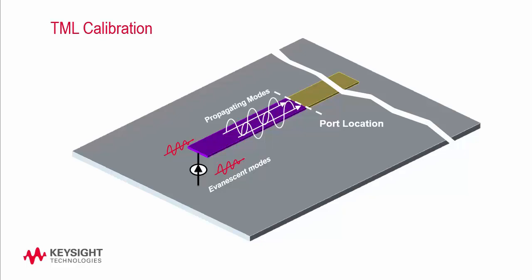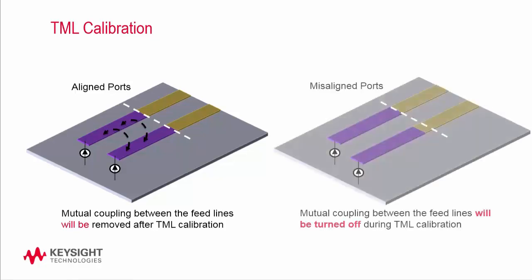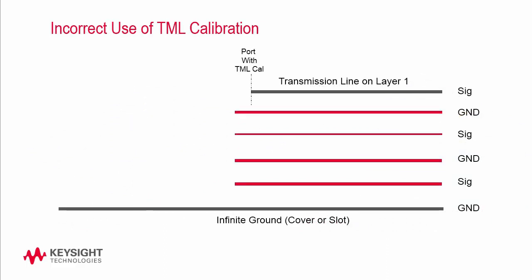At the port interface, single or multiple propagating TML modes can be present. TML calibration works fine in single mode operation. Once multiple modes start to propagate, especially at higher frequencies, you will get a warning during the simulation, and TML calibration is not recommended any longer. When multiple lines with aligned ports are set to TML calibration, the mutual coupling between the calibration lines is taken care of in the calibration. If the ports are not aligned, then the mutual coupling between the calibration lines is turned off.